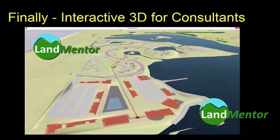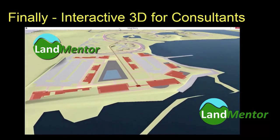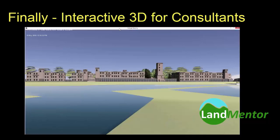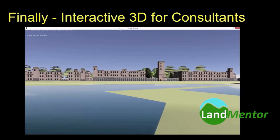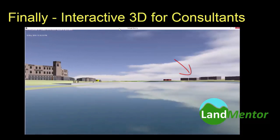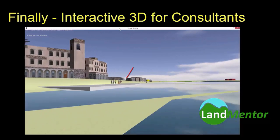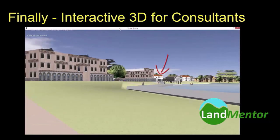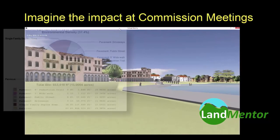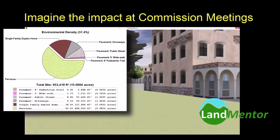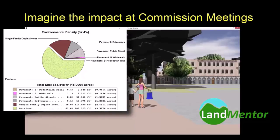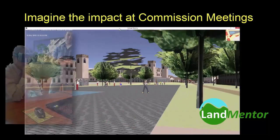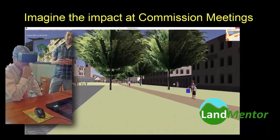On a 2D PowerPoint, concerned neighbors can only imagine how they will be impacted by change. With LandMentor, the impact is apparent — no more rendering exaggerations. What of the impervious surface for environmental impact? The developer who cannot visualize a 2D plan will be able to see exactly what they're paying for.